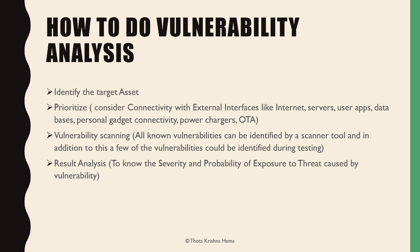How to do vulnerability analysis: first, identify the target asset — the work under the scope of your company. Then prioritize it by considering its connectivity to external interfaces such as internet connectivity, server connectivity, user applications, databases, personal gadget connectivity like phones, tablets, earphones, and even power chargers, as well as software updates like OTA vulnerabilities. After completing prioritization, the next step is vulnerability scanning.